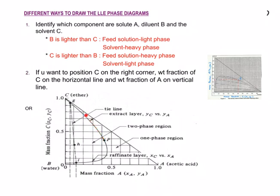You have your extract layer where you label all your V1 or V stream positions. For a single stage you have only V1 on this layer, but for multiple stages you have V1, V2, V3, V4 on this layer. This part is your raffinate layer, where you label your L streams — L1, L2, L3 up to LN on this particular layer.